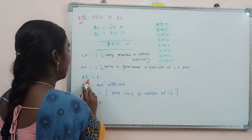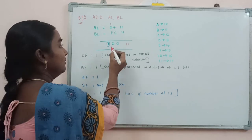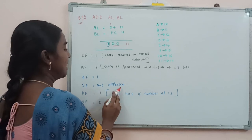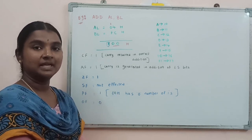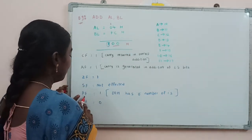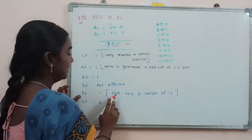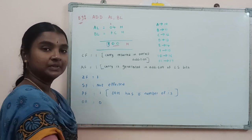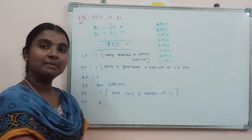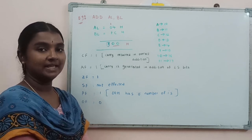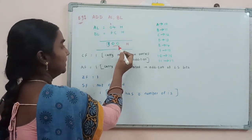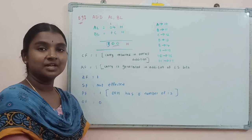The zero flag is set to 1 because the overall addition result is 00. The carry flag CF is set to 1 because a carry resulted from the overall addition. The auxiliary carry flag is also set to 1 because a carry was generated in the addition of the least significant bits. The sign flag is not effective here because we are not considering signed numbers — these are all unsigned numbers. The parity flag is set to 1 because the result 00H has 0 ones, which is an even number. The overflow flag is 0 because there is no overflow in the result.